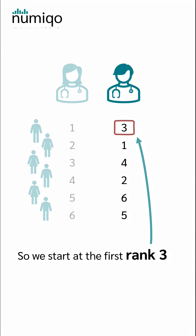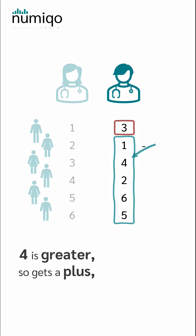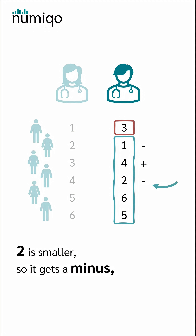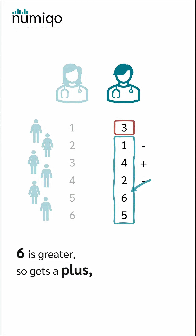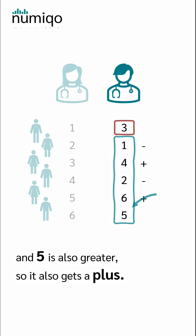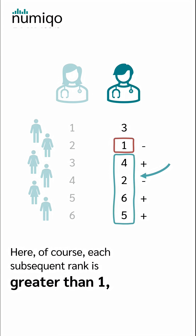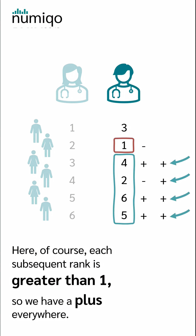We now look at each individual rank and note whether the values below are smaller or greater than itself. Starting at the first rank 3: 1 is smaller so gets a minus, 4 is greater so gets a plus, 2 is smaller so gets a minus, 6 is greater so gets a plus, and 5 is also greater so also gets a plus. Now we do the same for rank 1 — here each subsequent rank is greater than 1, so we have a plus everywhere.